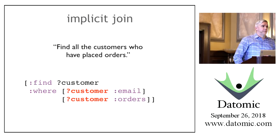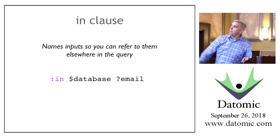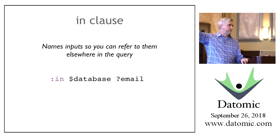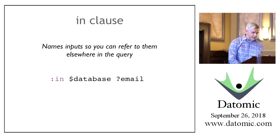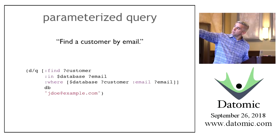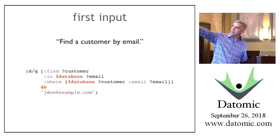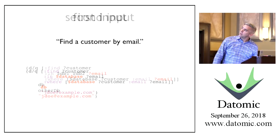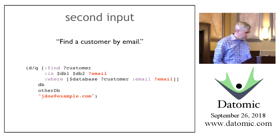If you're used to relational databases and JDBC, you're used to parameterized queries—you're not going to have all these values hard-coded in the query. That's accomplished in Datomic with an `:in` clause. The `:in` clause says these things are going to be bound on input. So I want to bind the database on input and bind email on input, then pass them in as arguments. The database is the first argument after the query, then email is the second.